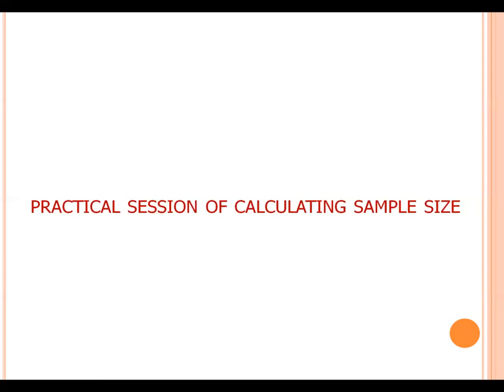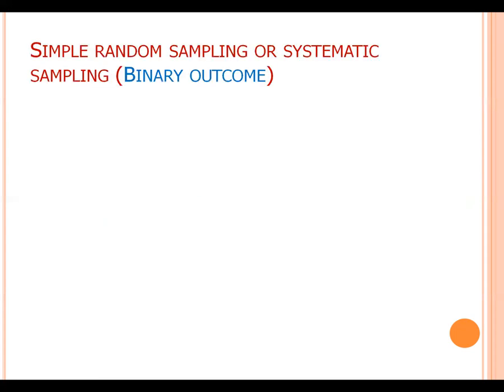Now I am going to present a practical session on calculating sample size. I am describing sample size calculation based on simple random sampling or systematic sampling. To calculate sample size, generally we use two types of indicators: quantitative outcome and binary outcome.